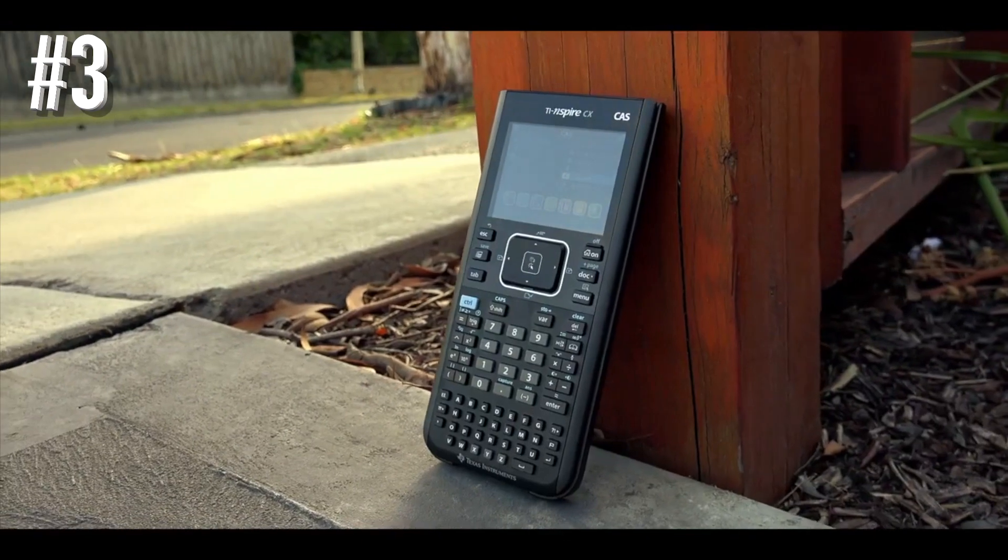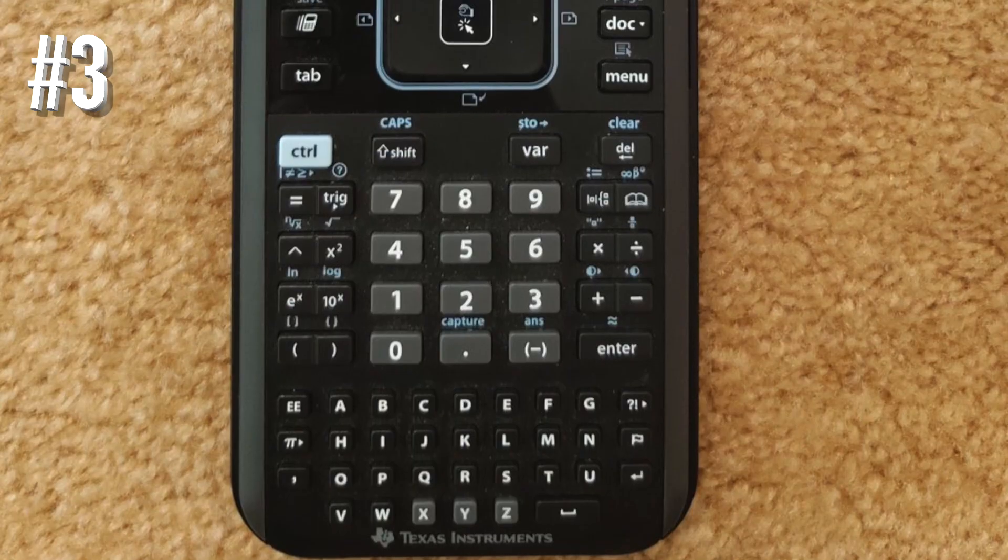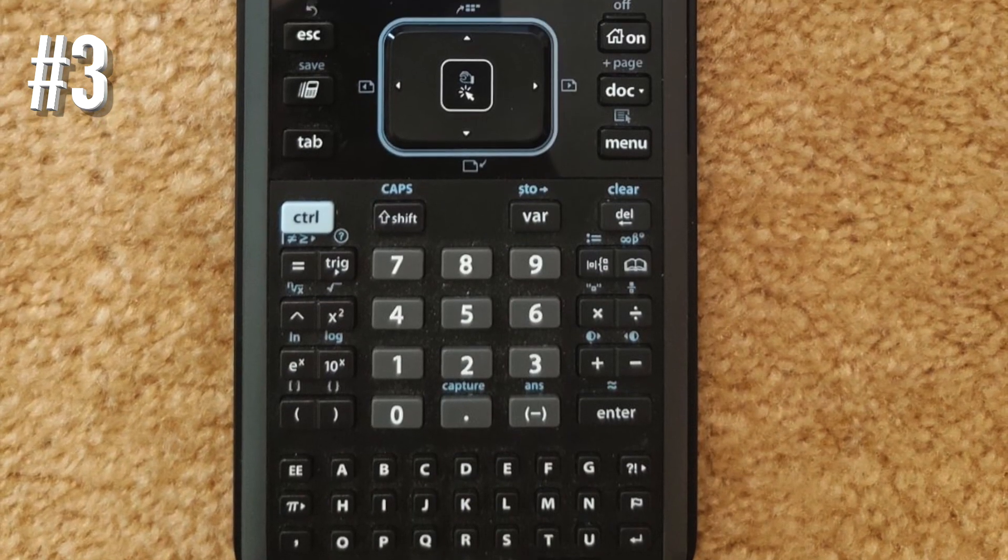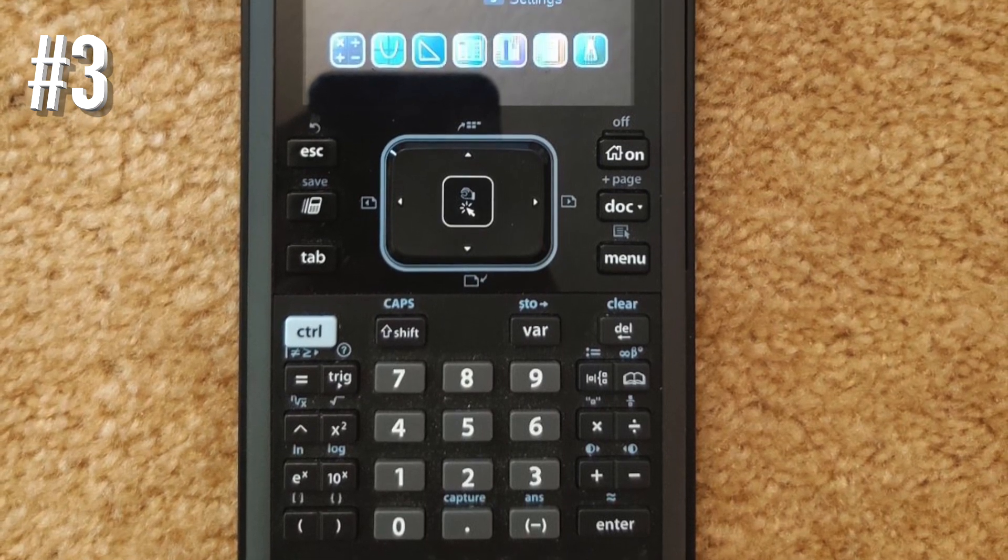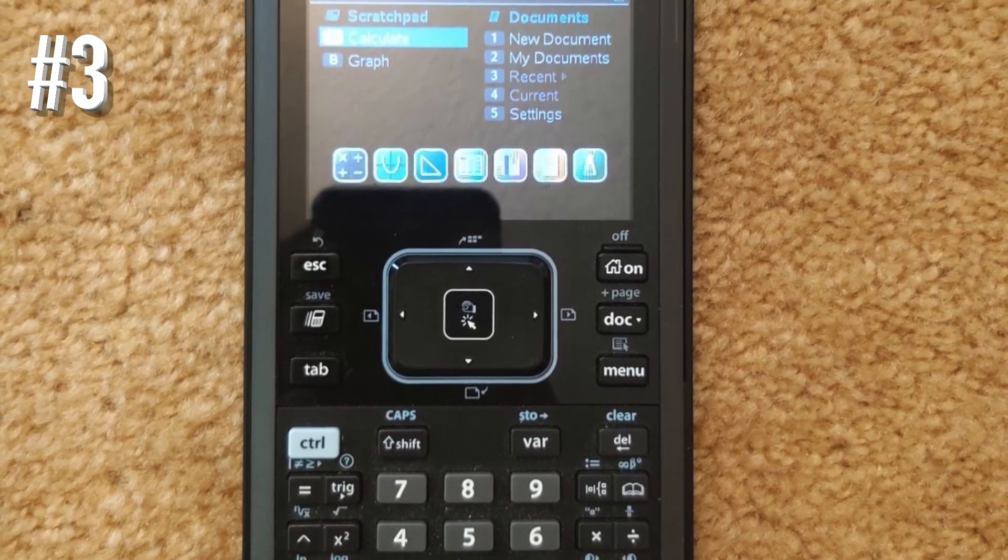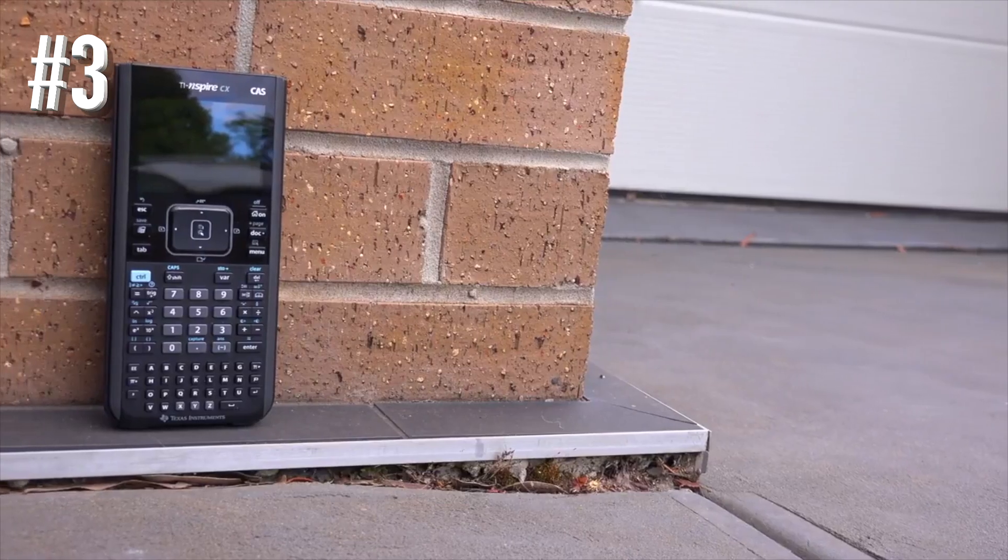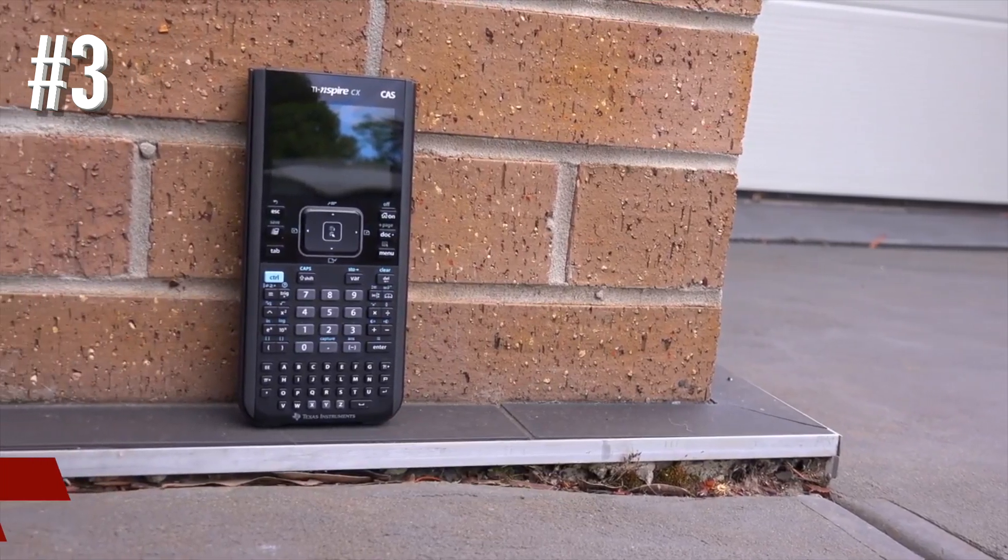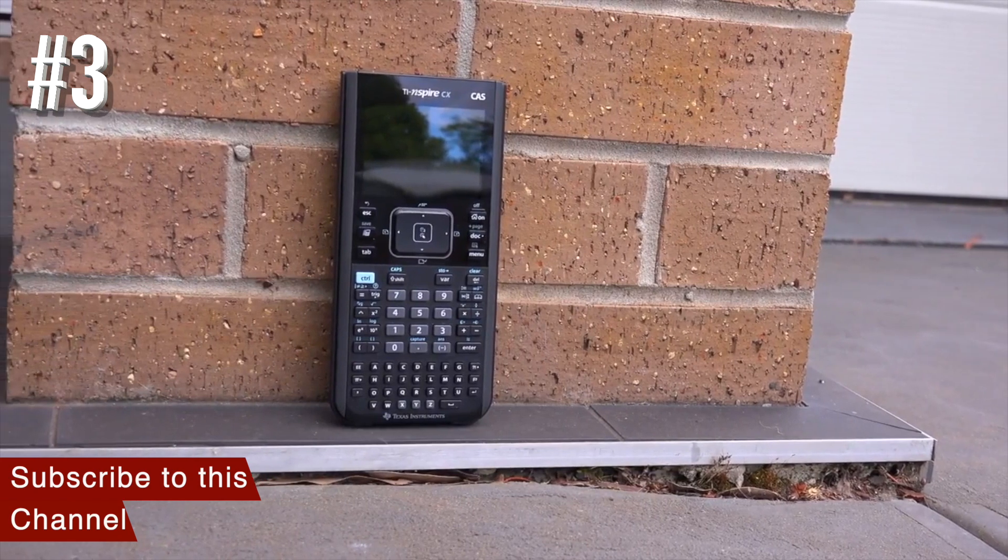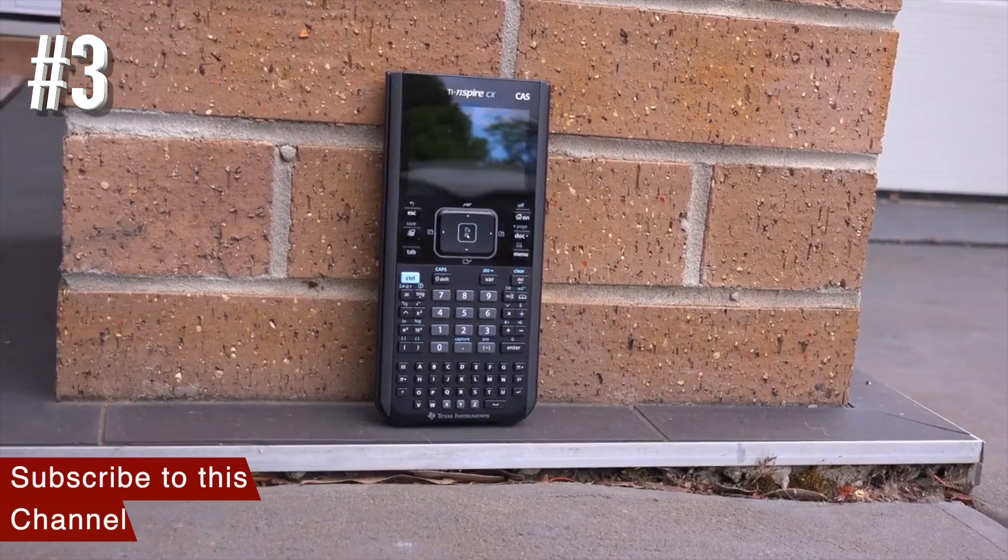The graphing calculator's CAS functionality or computational algebra system allows you to manipulate equations and solve for any variable within the equation. Those taking courses such as chemistry and physics will find this functionality helpful since it helps students discover the theory that drives equations.